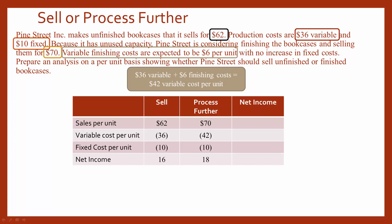If we fill in our net income column, we can see that if sales increases from $62 to $70, that's an $8 increase in net income. Our variable cost would have a $6 increase, which causes a negative impact on net income. But overall, we would have a $2 increase in net income if Pine Street chooses to process the bookcases further. Since it's a positive number, we would choose to process further.